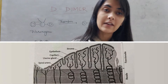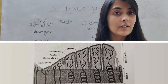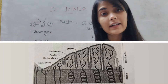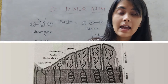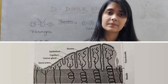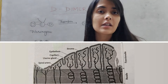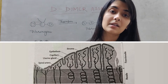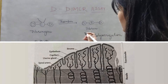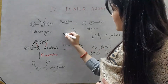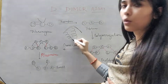The menstrual phase is the phase during which the functionalis layer degenerates and is sloughed off from the uterine wall, causing bleeding. The proliferative phase is the phase during which regeneration of the functionalis starts and the formation of spiral arteries begins. The secretory phase involves further differentiation of the spiral arteries, which begin to coil — these are the arteries of this coiled shape, visible here below the endometrium.